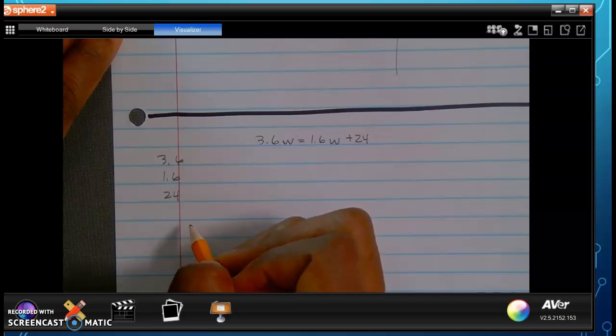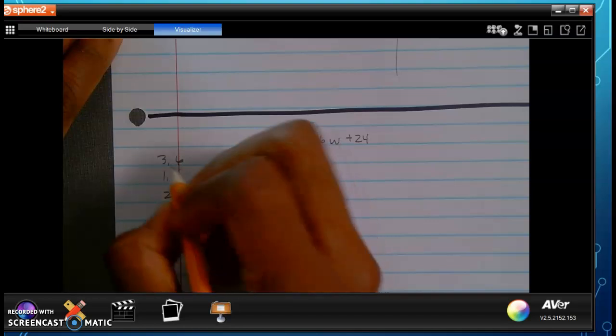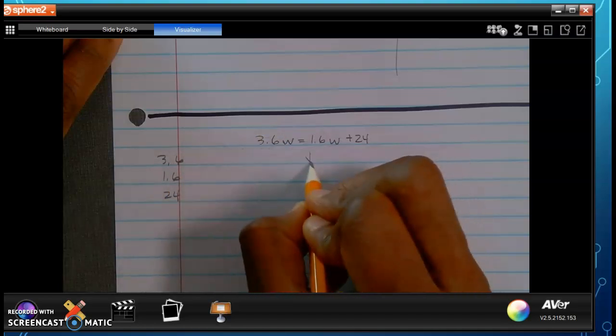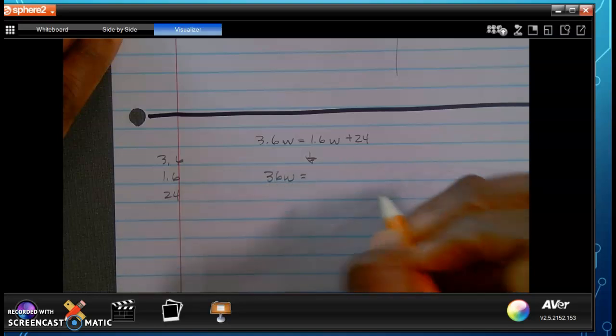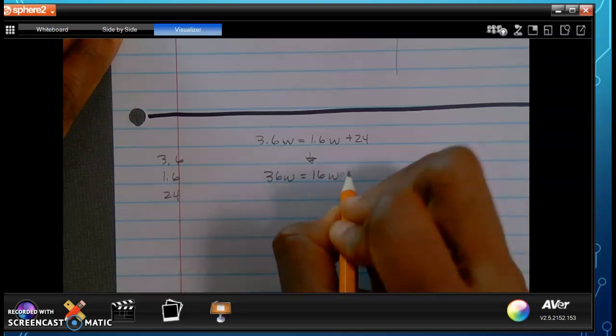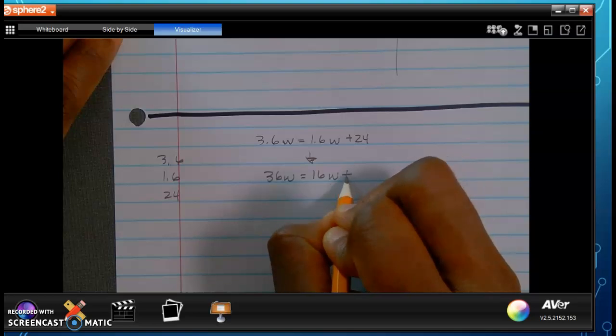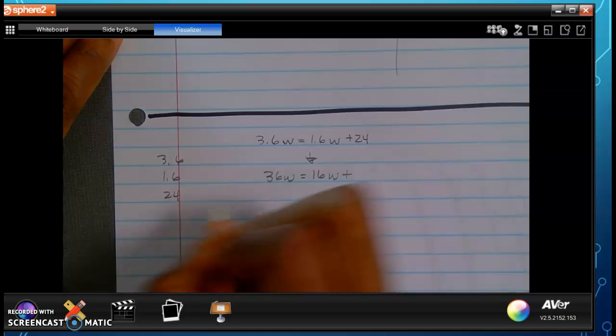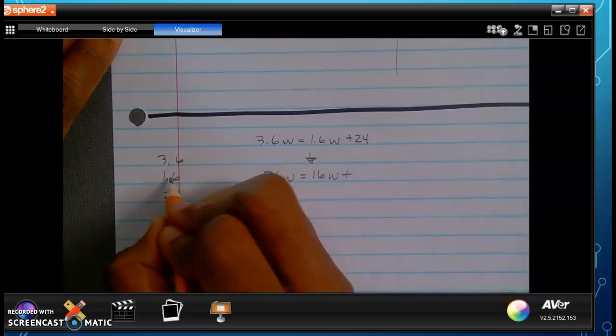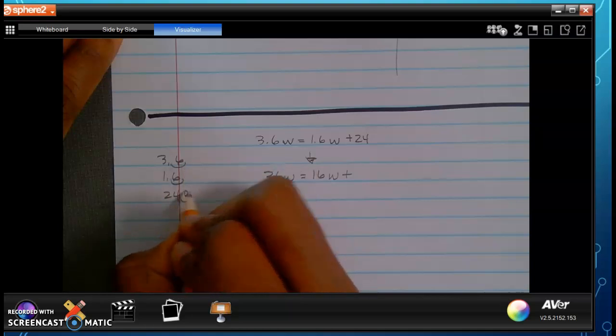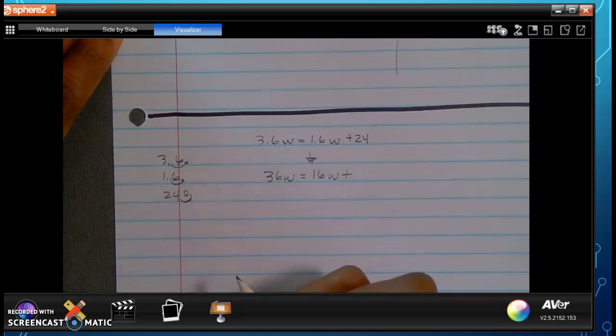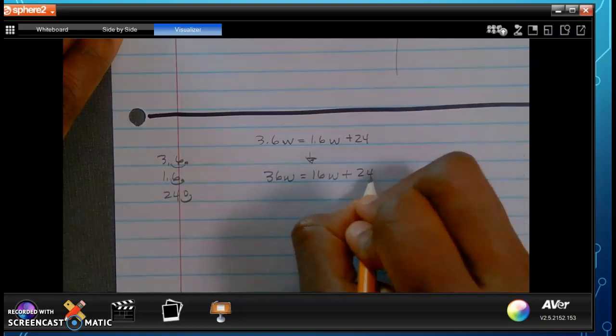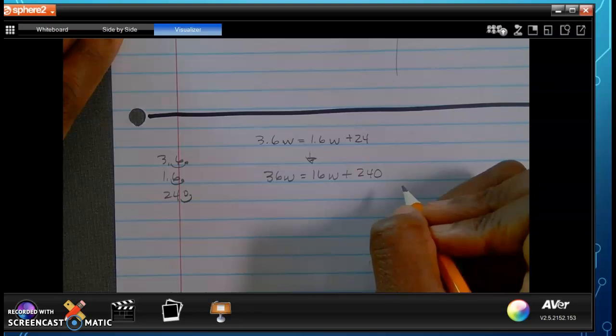If I move that over, that becomes 16. If I move this over, that becomes 13. So, how many decimals am I going to move for each one? I'm going to move each one one place. So, again, restate it. This becomes 36w is equal to 16w, which is plus or adding. When I move this one over, one, one. I'm going to move this over one as well. So, the decimals are here. That decimal becomes there. We have 240.